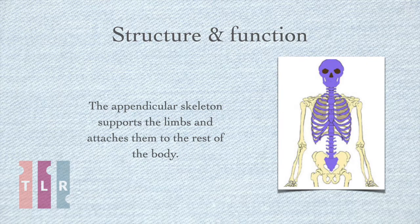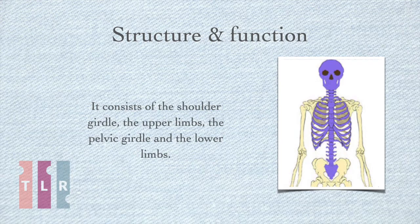The appendicular skeleton supports the limbs and attaches them to the rest of the body. It consists of the shoulder girdle, the upper limbs, the pelvic girdle and the lower limbs.